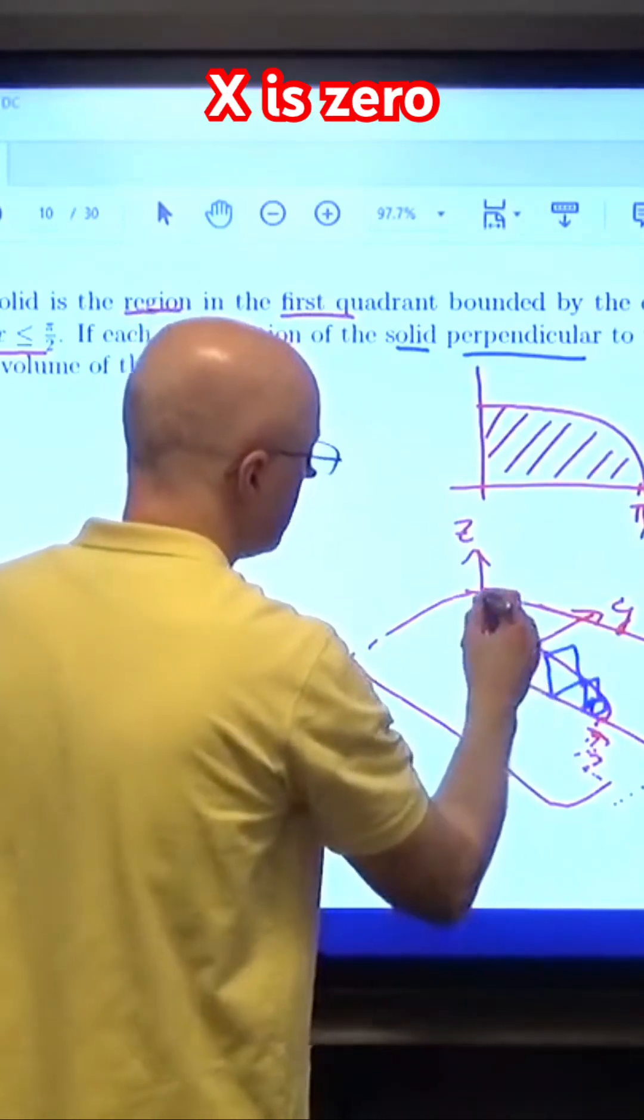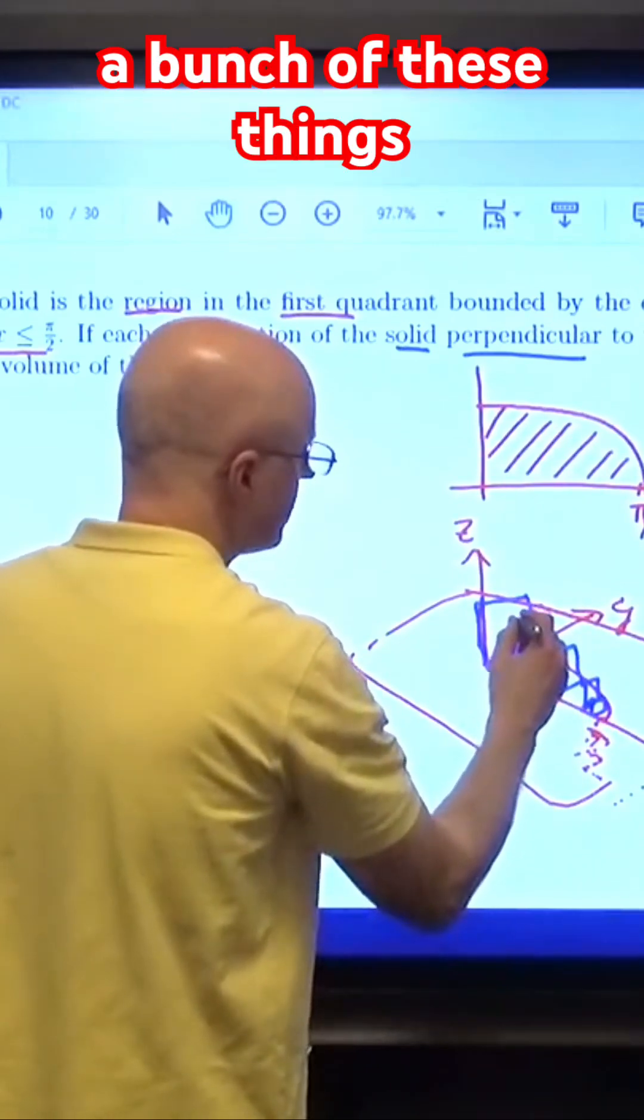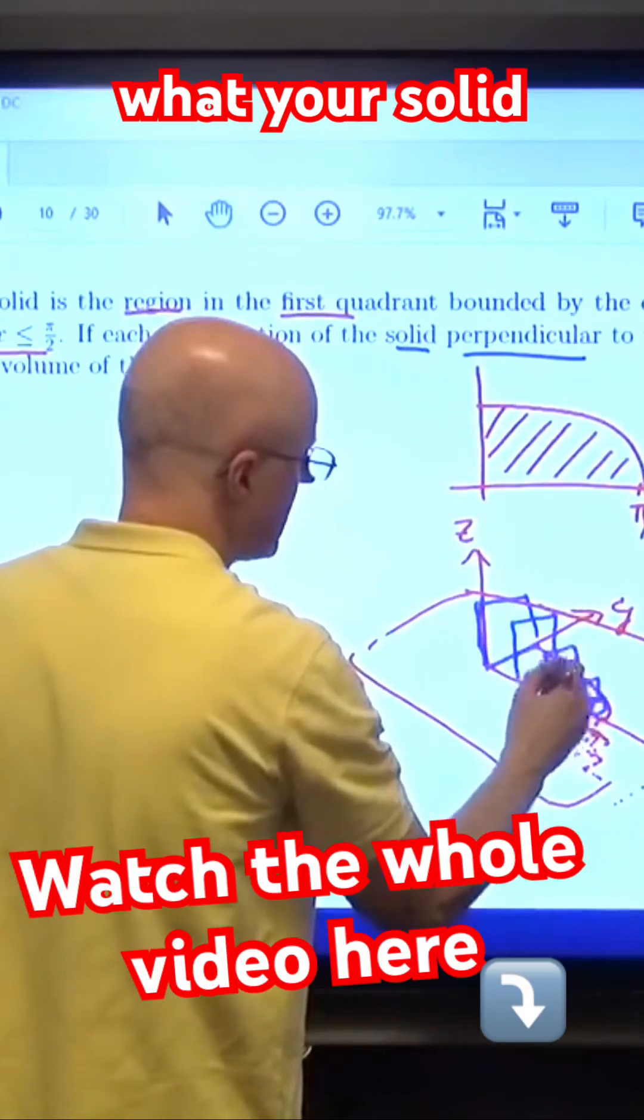It's biggest when x is zero. So you can draw a bunch of these things to sort of get a feel for what your solid looks like.